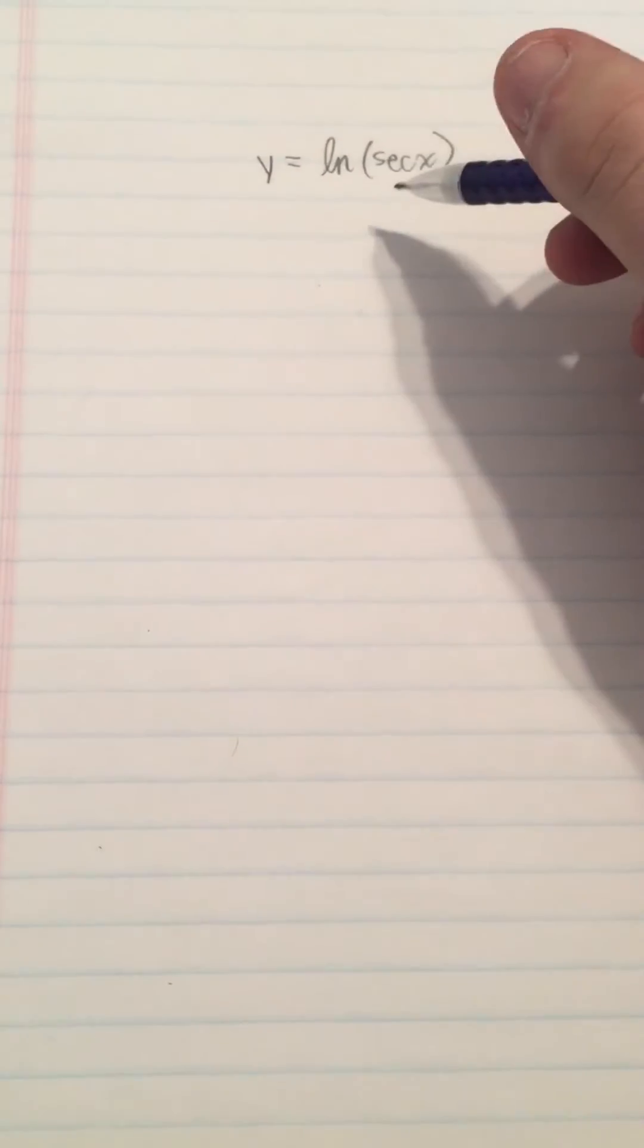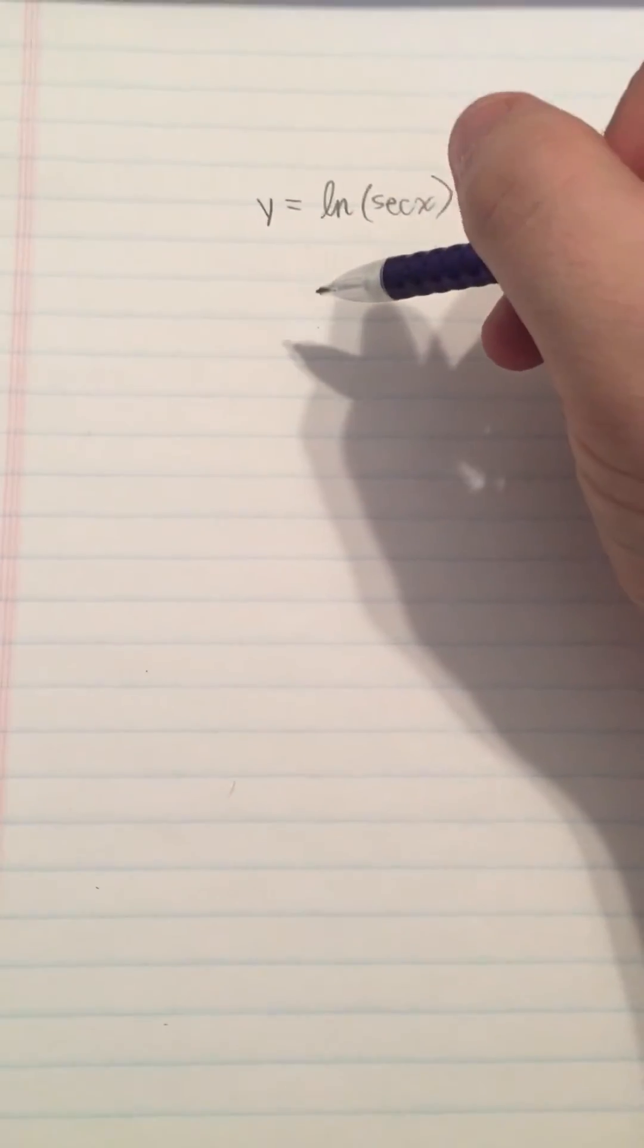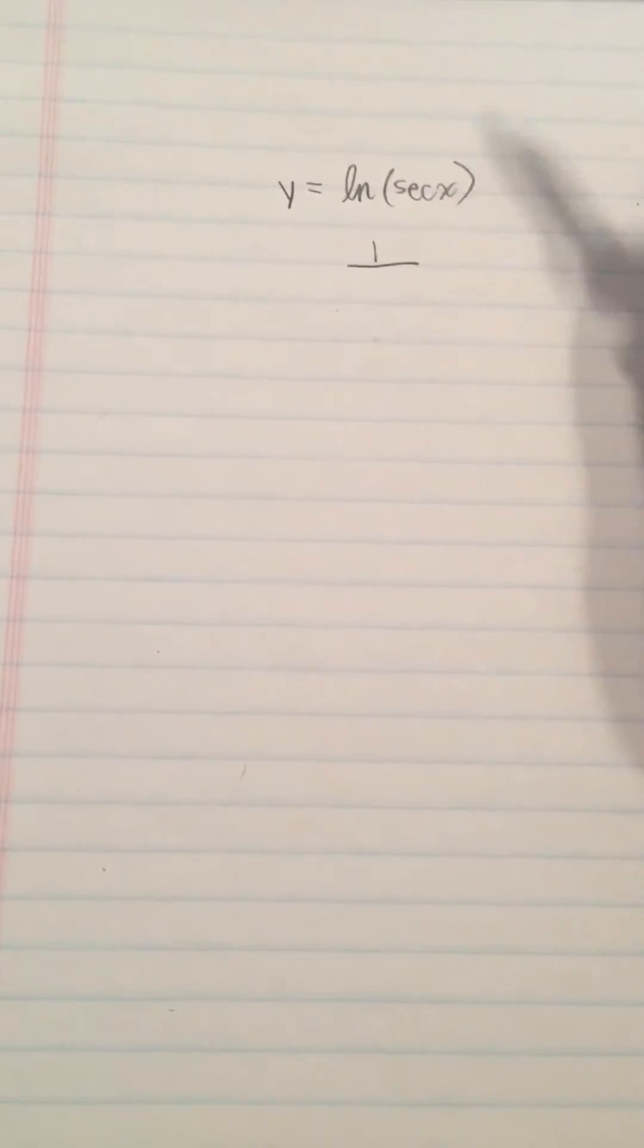Okay, so natural log of secant x. The derivative of natural log is going to give you 1 over stuff. So in our case, our stuff is secant x.